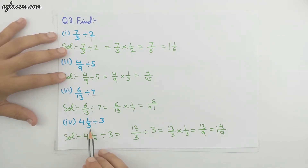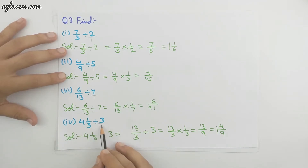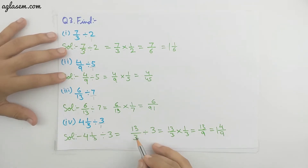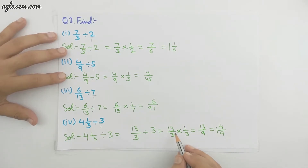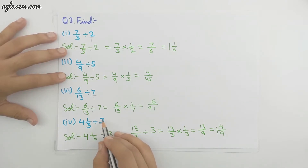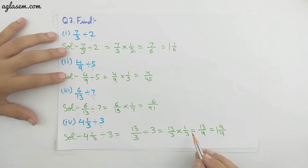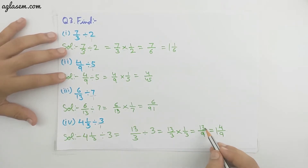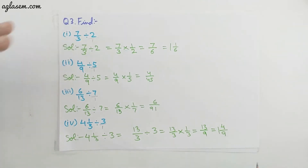Fourth part: 4 whole 1/3 divided by 3. The mixed fraction 4 whole 1/3 changes to the improper fraction 13/3, and 3 becomes 3/1. So 13/3 divided by 3/1 becomes 13/3 multiplied by 1/3. Multiplying gives 13/9, which is an improper fraction. We change it to the mixed fraction 1 whole 4/9.